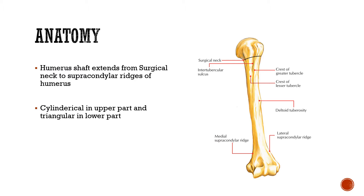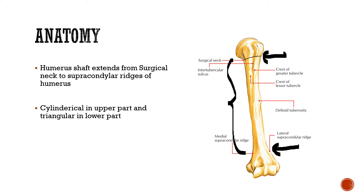Starting with anatomy, we need to know the extent of the shaft of humerus. As seen in this diagram, the shaft starts from the surgical neck and extends till the upper border of the supracondylar ridge — both the lateral and the medial supracondylar ridge.